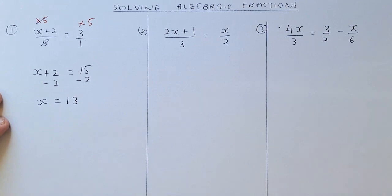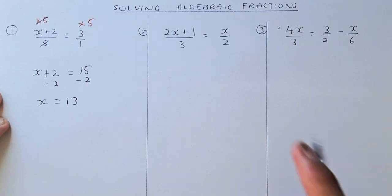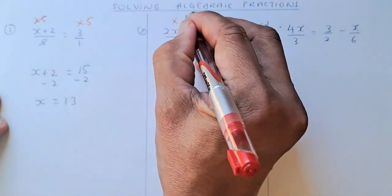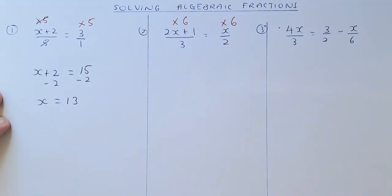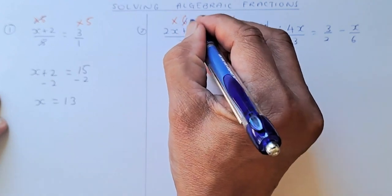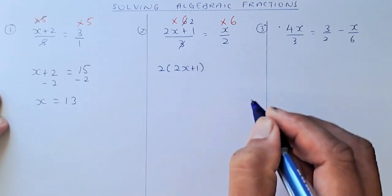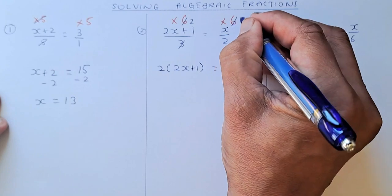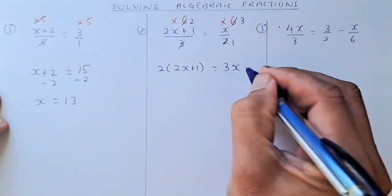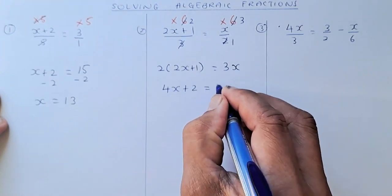The second example is 2x plus 1 over 3 is equal to x over 2. The lowest common denominator of 3 and 2 is going to be 6. So you multiply 6 on the left and 6 on the right to get rid of the fraction immediately. When you multiply by 6, 6 divided by 3 is 2, so the 3 cancels out. You are left with 2 bracket 2x plus 1 on the left hand side. On the right, 6 over 2 cancels to give 3, so that becomes 3x. Now you expand: 4x plus 2 is equal to 3x.